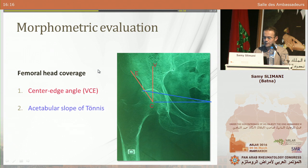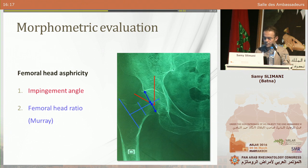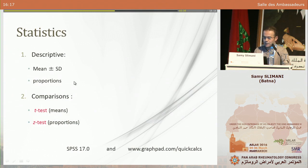We used exactly the same angles and parameters as in the original publication. To assess femoral head coverage, we used two parameters: the center-edge angle as described by Wiberg, and the acetabular slope of Tönnis. For evaluation of retroversion, we looked for the crossover sign, an indirect sign of acetabular retroversion. Femoral head asphericity was evaluated using the impingement angle and the femoral head ratio as described by Murray. We used the commonly accepted cutoff table for defining dysplasia and the two types of impingement. Data were expressed as means, standard deviations, and proportions, and compared using t-tests for means and z-tests for proportions.